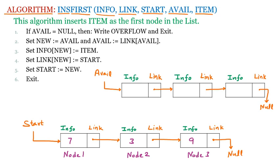The item is the value we want to insert. Let's say the item is 11, and we want to insert it at the first position of the linked list. So 11 should be placed before the existing first node. This algorithm inserts item 11 at the first node in the linked list.